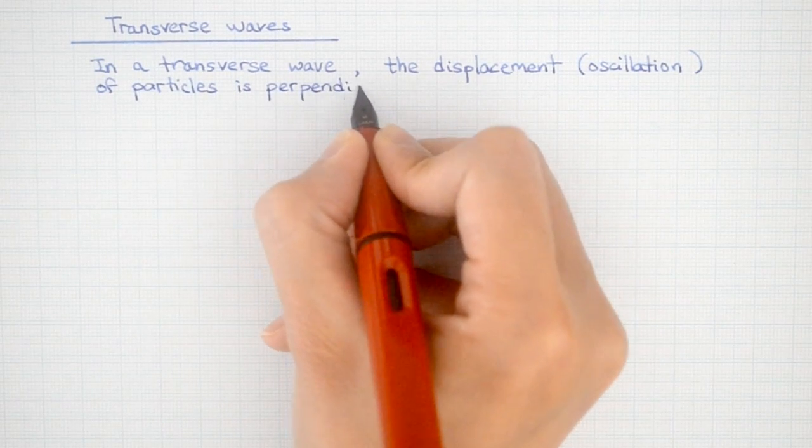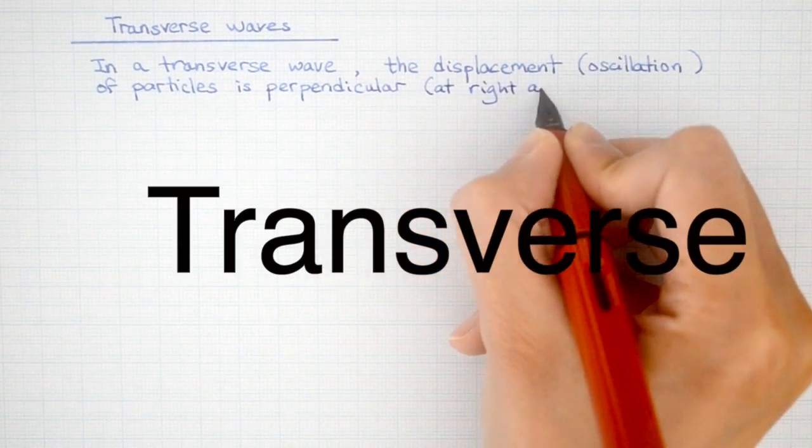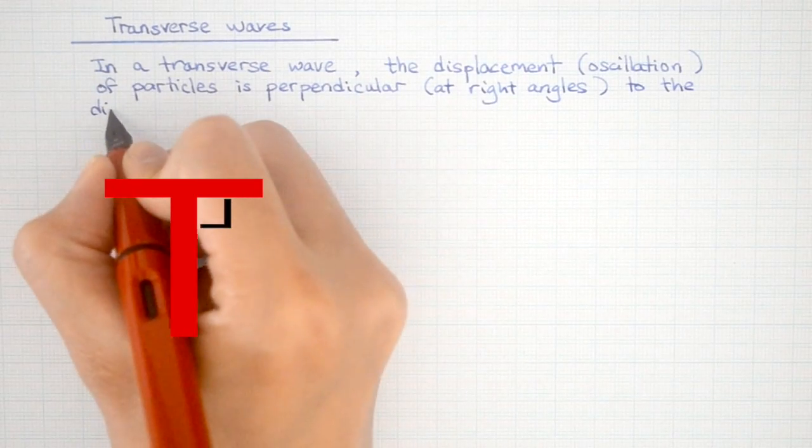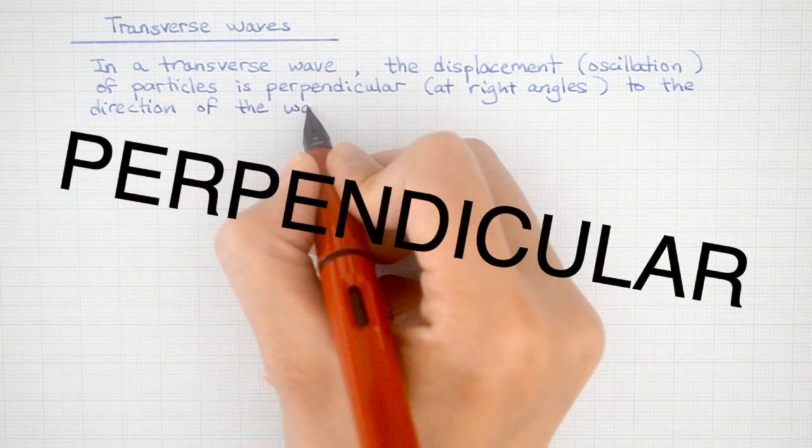This is probably something you've learned or memorized for your GCSE physics exam. Since the word transverse starts with the letter T, there's right angles in the letter T, so the two things are perpendicular. But let's look at what this actually represents.